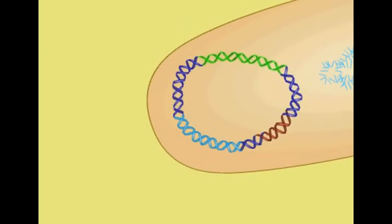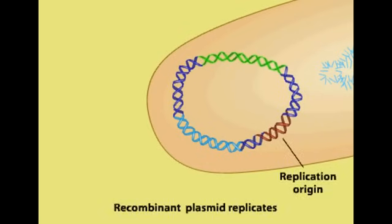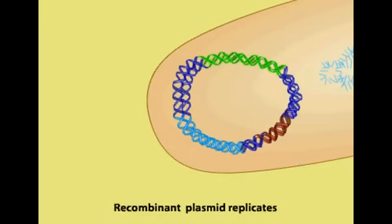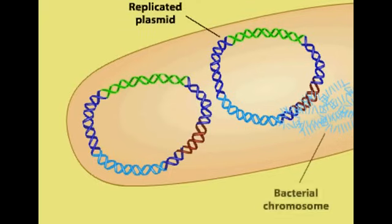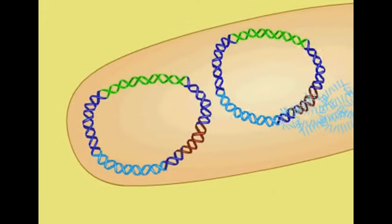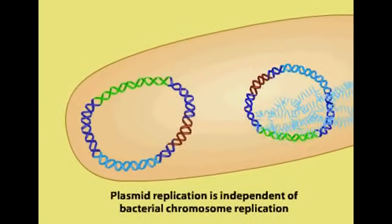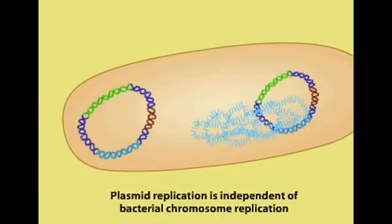The replication origin allows the plasmid to replicate by using the host cell's enzymes. Plasmid replication is independent of host cell division, but plasmids are distributed to each daughter cell when the host cell divides.